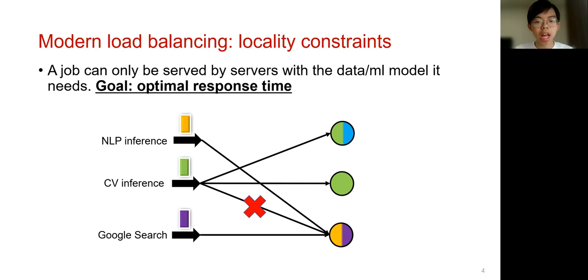On the other hand, if a user submits a green job asking for a CV inference, then the dispatcher can either dispatch it to the first or second servers because they all have the required machine learning model, but it is infeasible for the dispatcher to route the job to the third server. Same things happen for the purple job, which can only be served by the third server. Therefore, due to the locality constraints, we must rethink algorithms for load balancing, and the design goal is to obtain optimality in mean response time for all jobs.